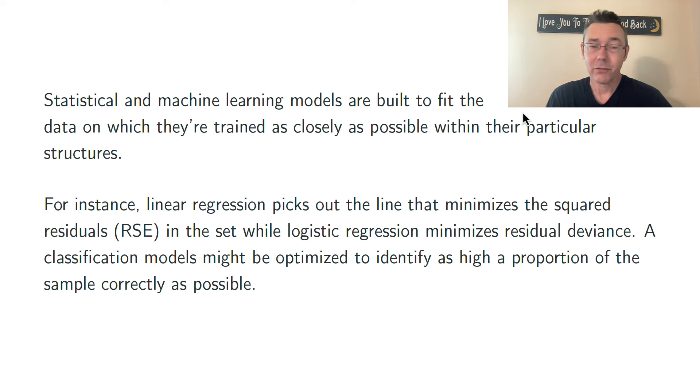For instance, linear regression is done by ordinary least squares, typically, where you're minimizing the squared residuals. Logistic regression is minimizing deviance. Classification models are often trying to optimize the classification rate and get as high a proportion possible correct in the sample data.